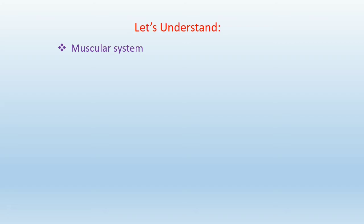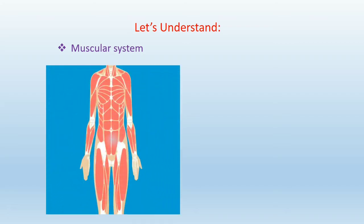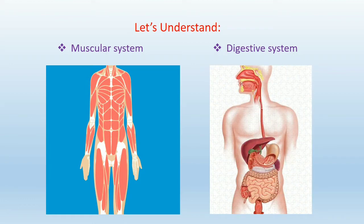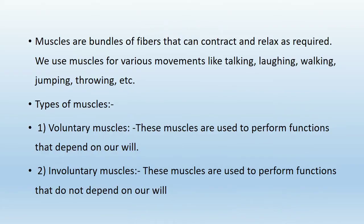Let's understand what is the Muscular System. Muscles are bundles of fibers that can contract and relax as required. We use muscles for various movements like talking, laughing, walking, jumping, throwing, etc. There are two types of muscles.